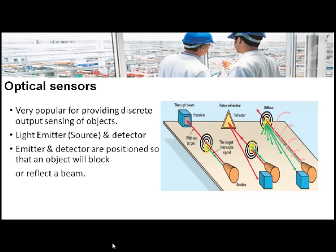Optical proximity sensors are very popular for providing discrete output for sensing of objects. These sensors basically consist of an emitter, that is a source, and a detector. The emitter and detector are positioned in such a way that the object will block or reflect a beam of light.